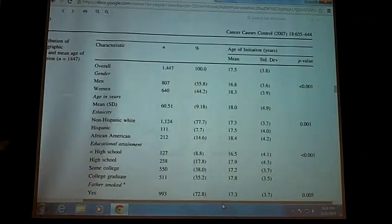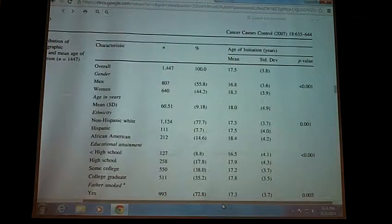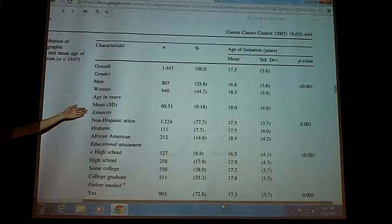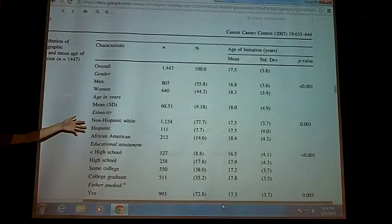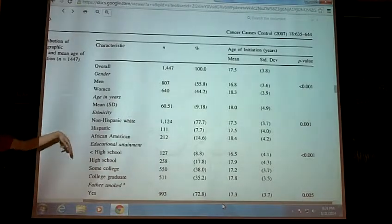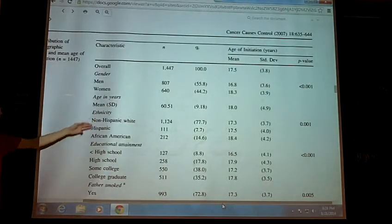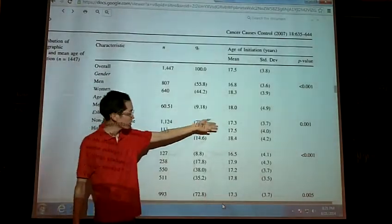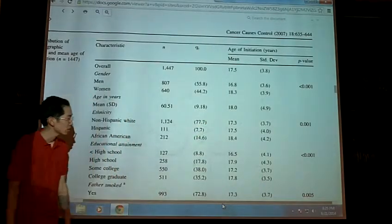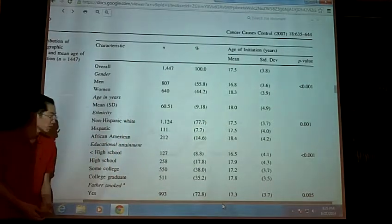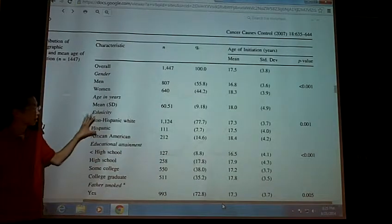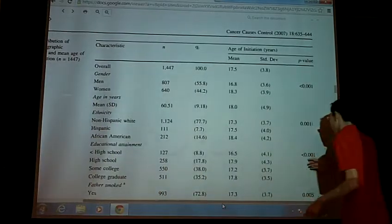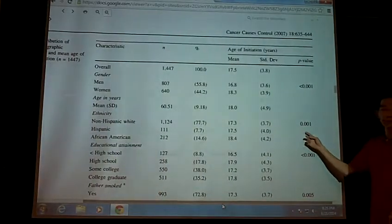So, age is significantly related to smoking initiation. Then they did ethnicity. Okay. And I guess they only looked at three. Okay. Non-Hispanic white, Hispanic, African-American. These are the different ages at which they started smoking. Mean age. And so the means were 17.3 years, 17.5, and 18.4. And so here they did one-way ANOVA. And the results of that one-way ANOVA gave a p-value of .001.